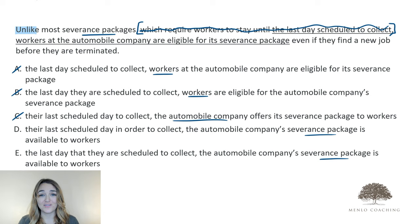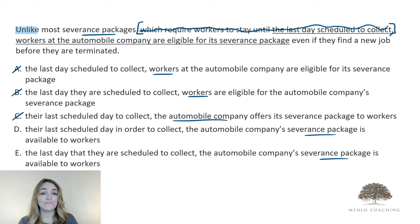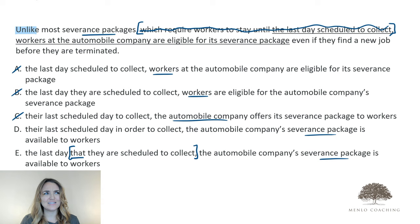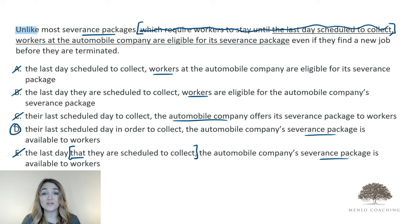And that does wonders for us in effectively communicating with one another, but it can actively work against us in the context of the GMAT. Because our job isn't to be forgiving on the GMAT — our job is to be scrutinous. Our job is to look at that answer option and say, 'I see what you were getting at, but that's not what you said.' And answer option E falls victim to exactly that. Because while we can use context to get the gist of what they were trying to say, if we really read to interpret the meaning, this 'that' indicates that they are required to stay until the last day they are scheduled to collect. Are they scheduled to collect across many different days and have to stay to the last of those days to get the whole severance package? That doesn't make any sense. By process of elimination, only answer option D expresses both a comparison that is logical and a meaning that is a logical interpretation of the sentence.